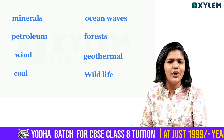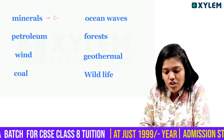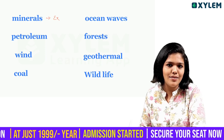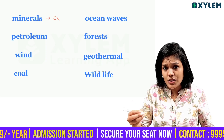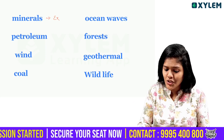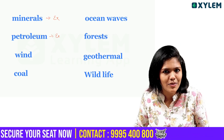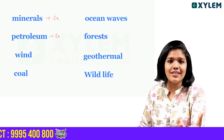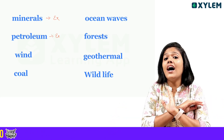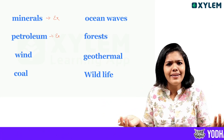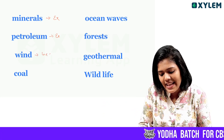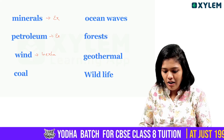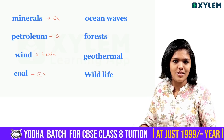Minerals — exhaustible natural resource. Petroleum — also exhaustible natural resource. Wind — it is inexhaustible because it is in unlimited quantity. Wind is inexhaustible. Coal — it is an example of exhaustible natural resources.